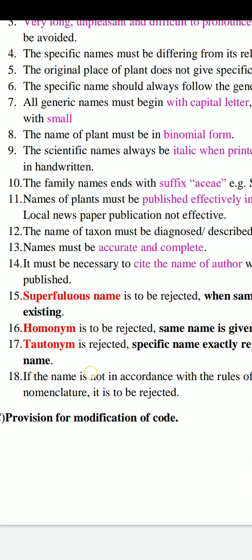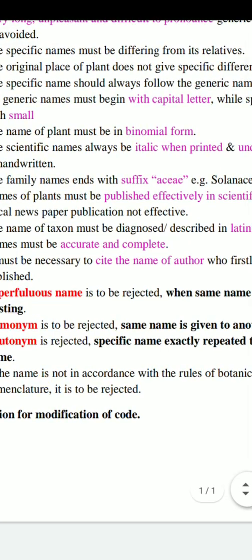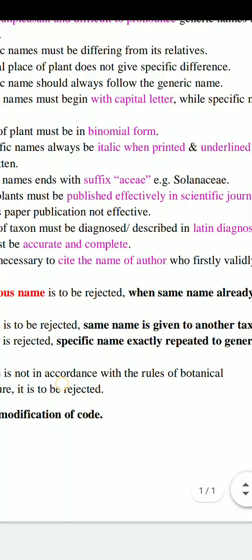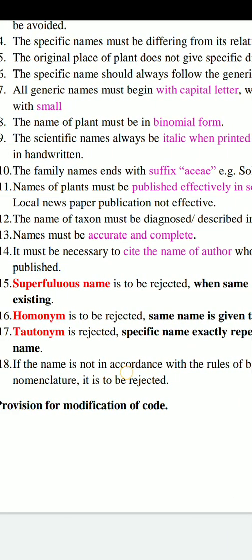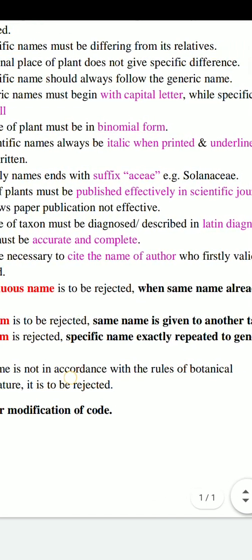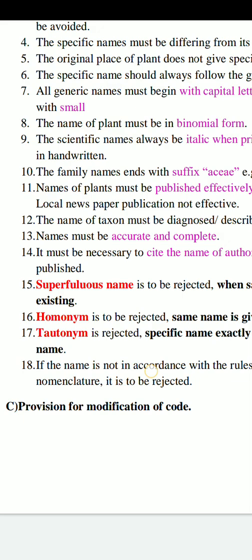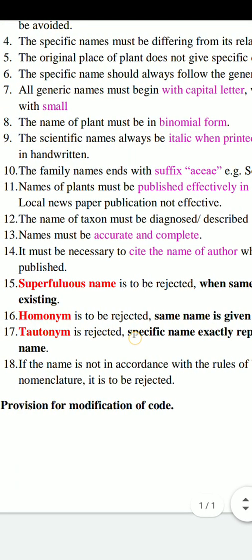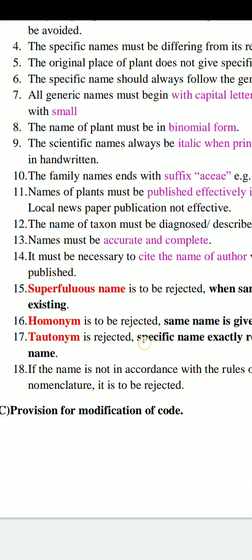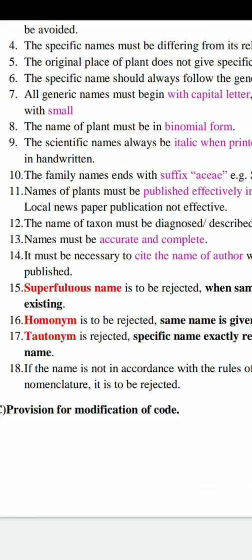For example, Guttiferae — the new name is called Clusiaceae. Rule 11: Names of plants must be published effectively in scientific journals. Publication of scientific material is most essential so it reaches all people. Local name and local newspaper publication is not effective because it is only distributed in specific regions — for example, Marathi is only in Maharashtra state. That is why such local newspaper publications are not effective for scientific names.